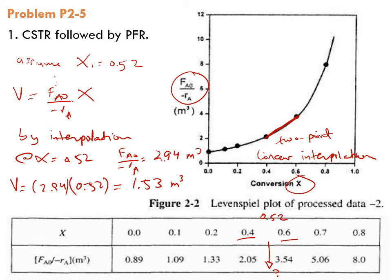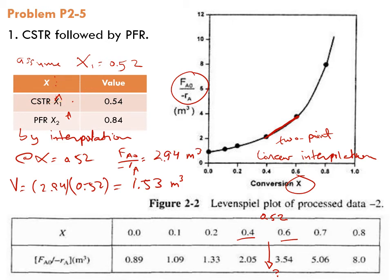After you repeat all of this, the answer which I have obtained is as follows: I got a conversion of 0.54. Then you repeat the procedure now for plug flow reactor, the second reactor, and again through trial and error, I found X to be 0.84.